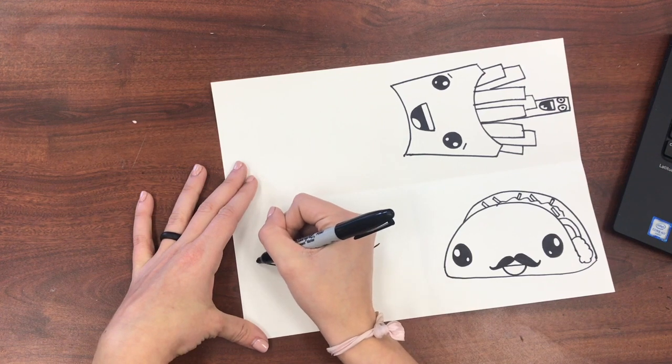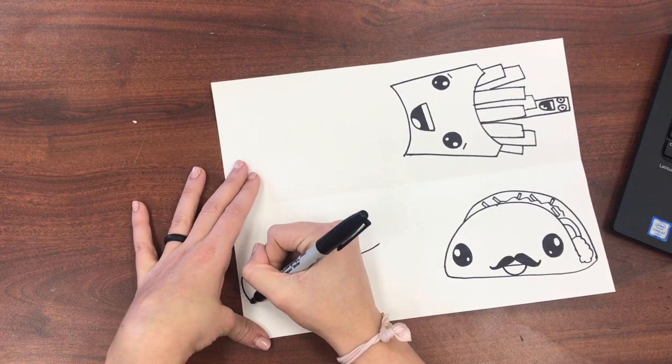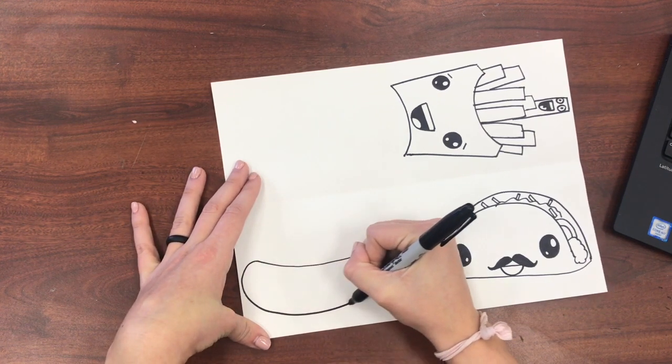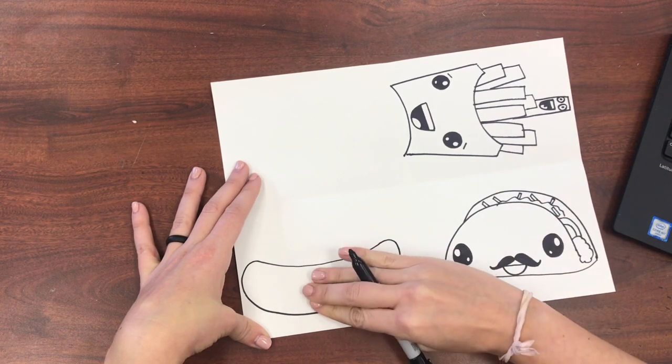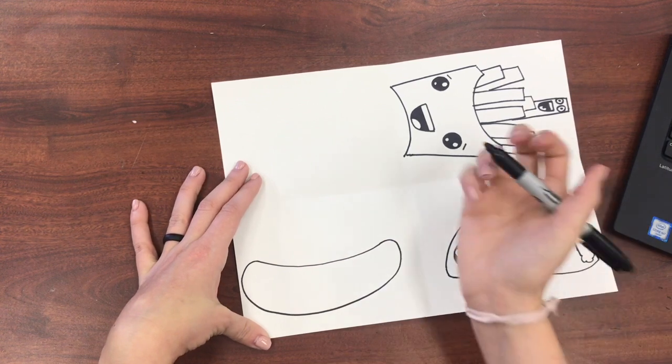Then we're going to connect our sharpie back to where we left off and we're going to curve it around for the side of the bun and the bottom of the bun. I'm going to curve it right back around to where I started. That should be about three finger lengths.